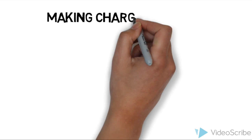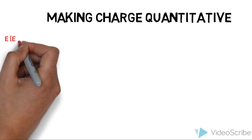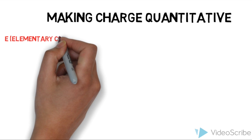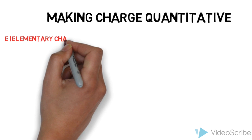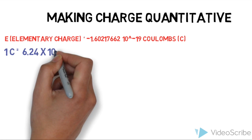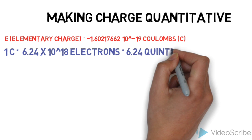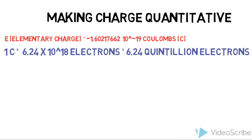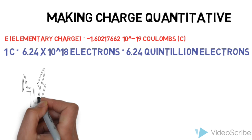Now let's make charge quantitative. Electric charge is measured in a unit called the Coulomb. One charge on an electron is called the elementary charge with a value of negative 1.6 times 10 to the minus 19 Coulombs. One Coulomb is about 6.24 quintillion electrons.